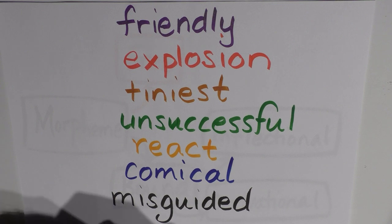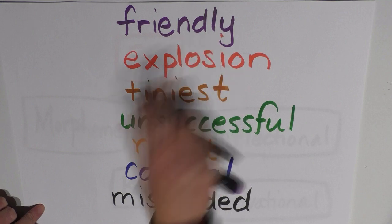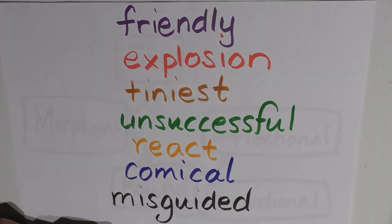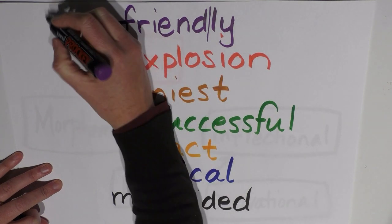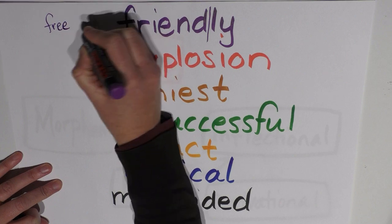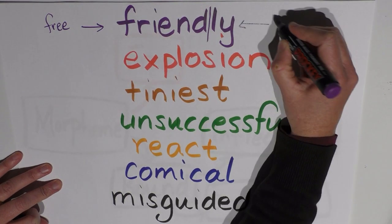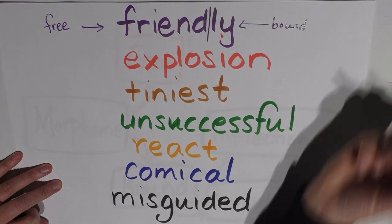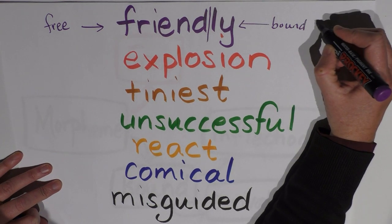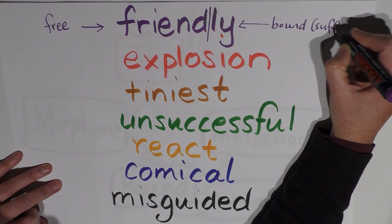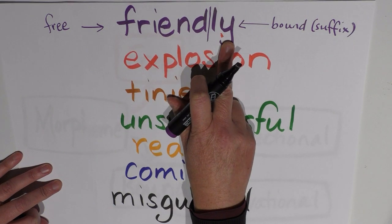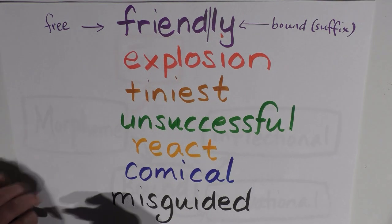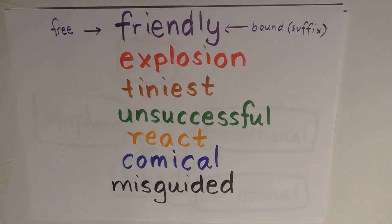Our first word here is 'friendly.' In this instance, I believe we have two morphemes. We have 'friend' and we have 'ly.' And 'friend' is our free morpheme, and 'ly' is our bound morpheme. I think it's a bound morpheme; it's on the end, so therefore it's a suffix. And of course, the purpose of this suffix is to turn the noun 'friend' into the adjective 'friendly.' So it's actually changing the class of the word.